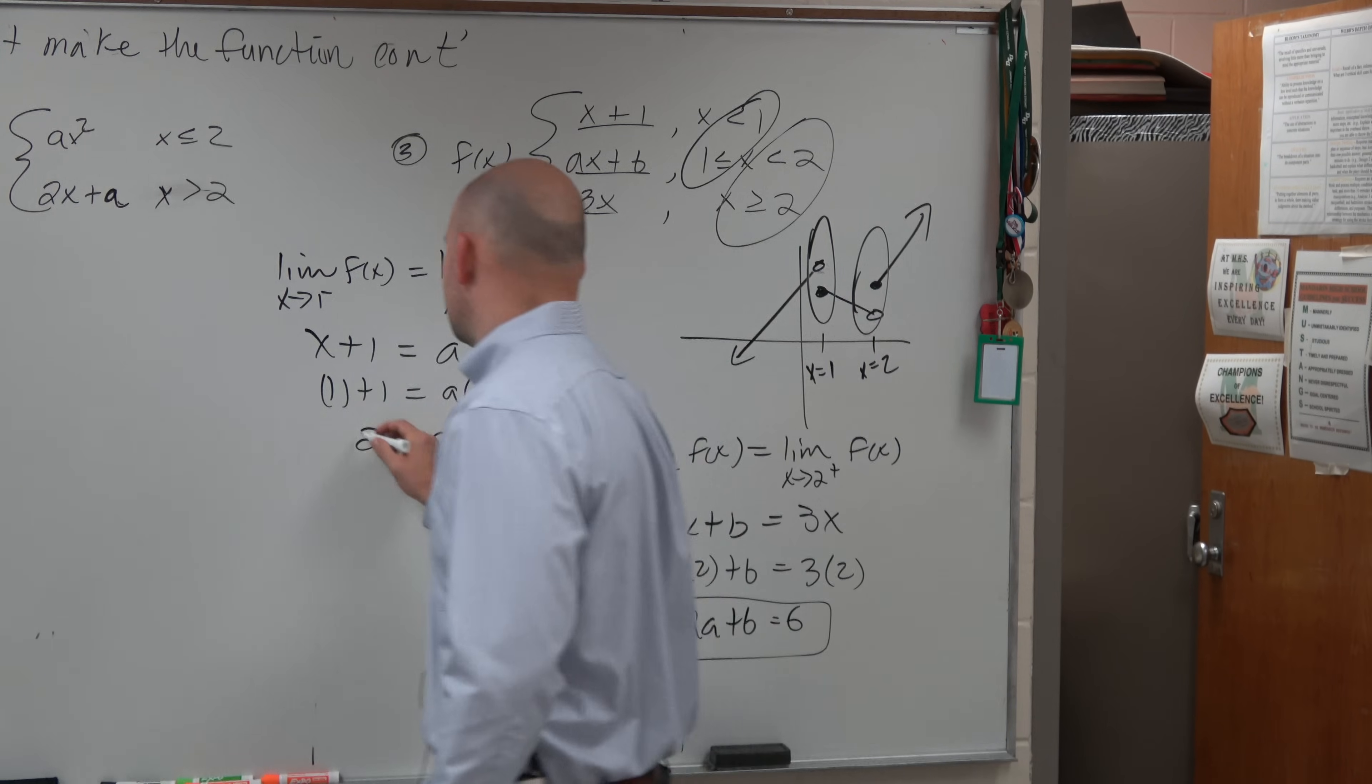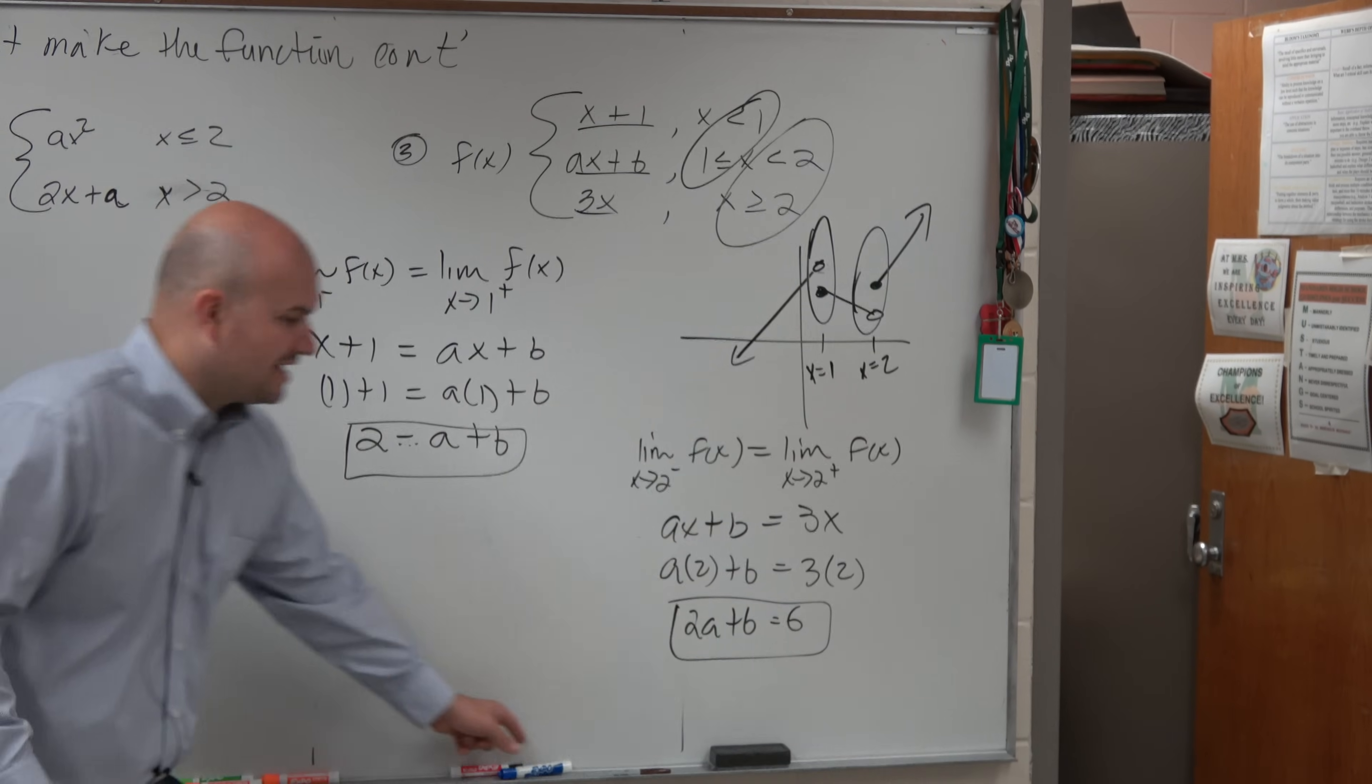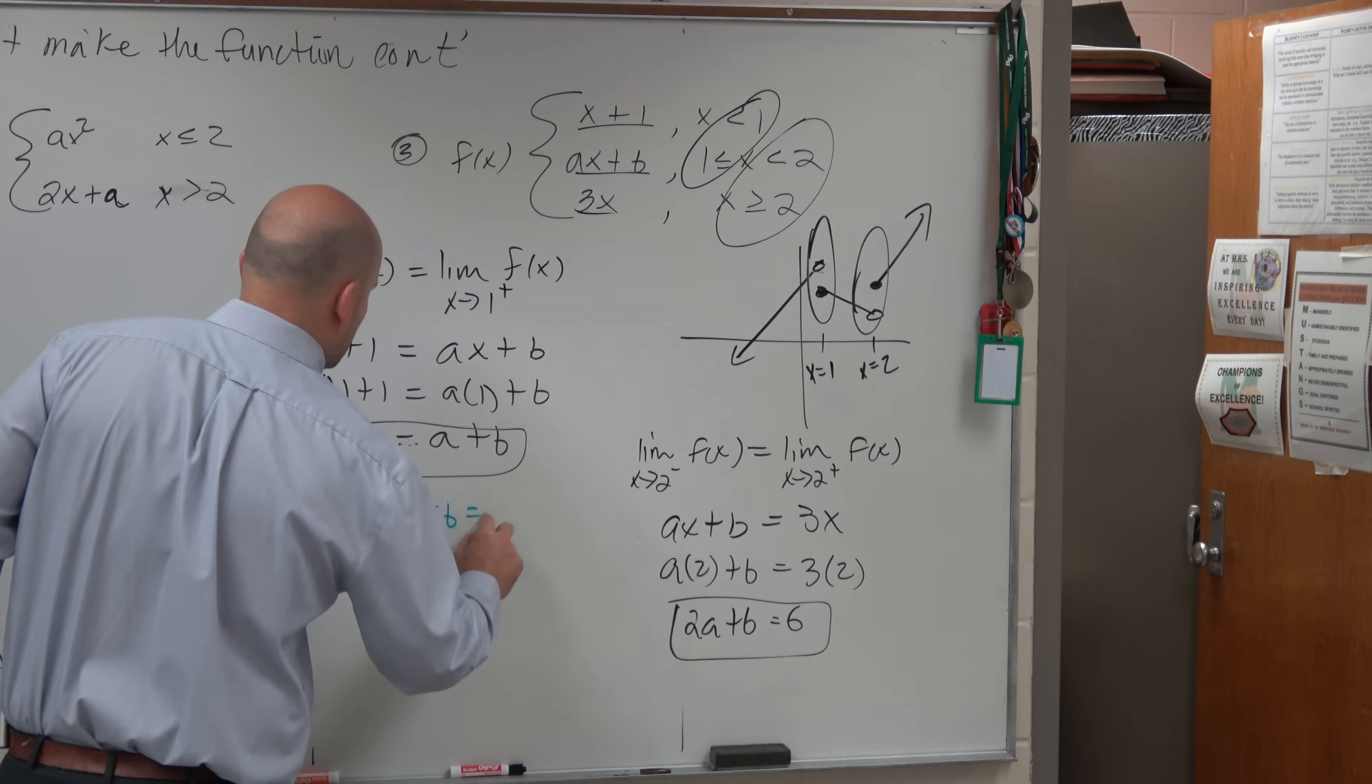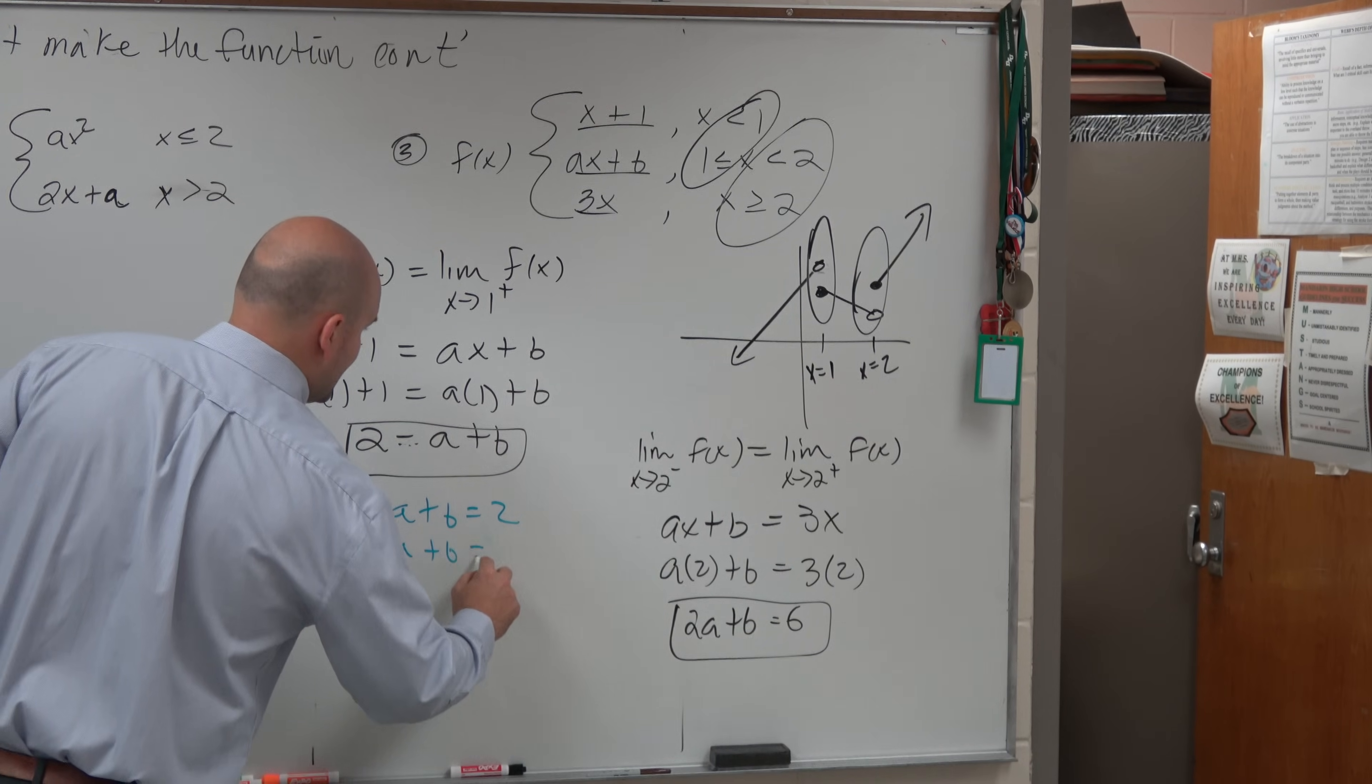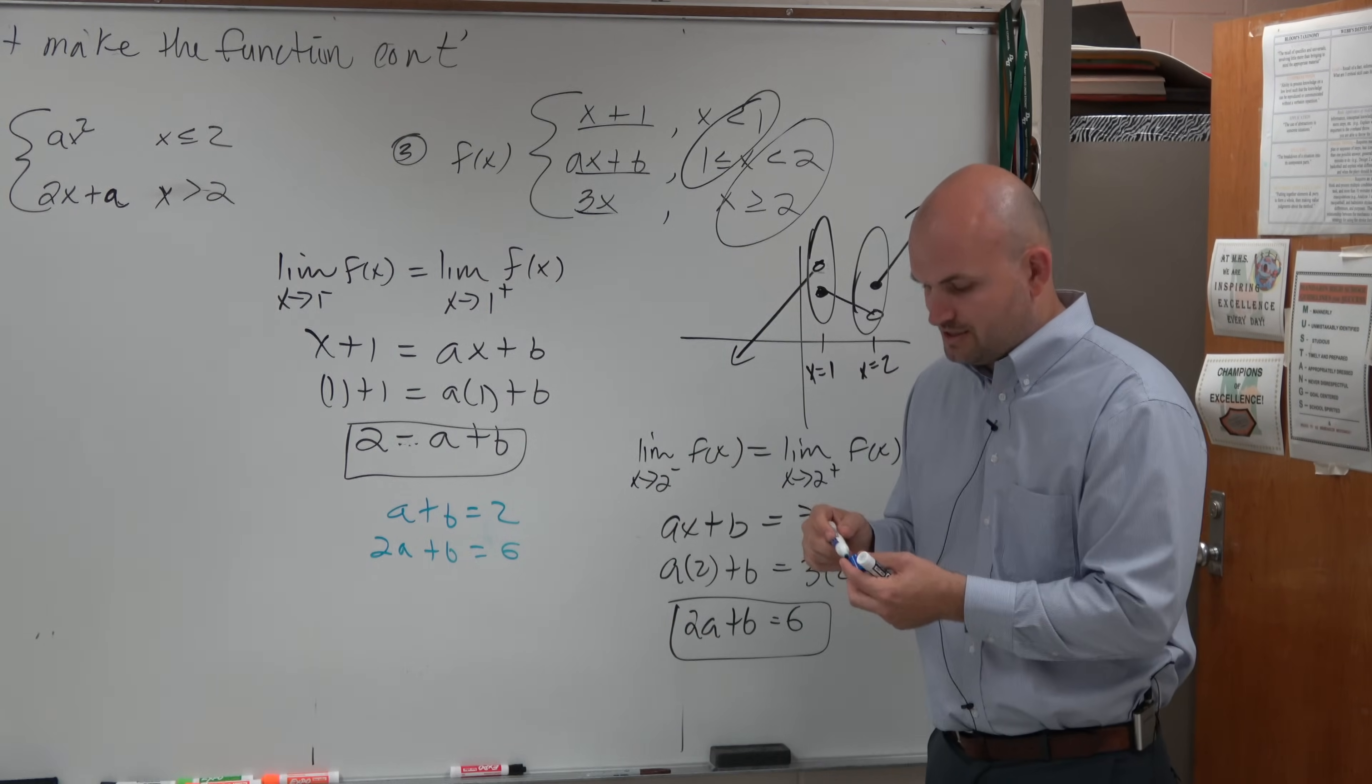So there's one equation, and there's my other equation. Now that I have these two equations, I can just use a system of equations to solve. a plus b equals 2, and 2a plus b equals 6. So I just rewrote them. You don't need to rewrite them, but that's the way I like to do it.